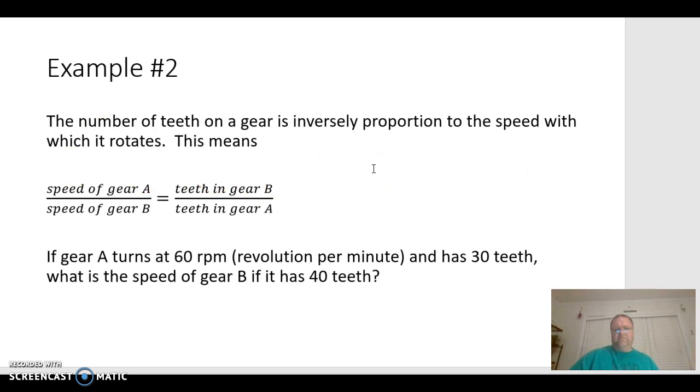Suppose that the number of teeth on a gear is inversely proportional to the speed with which it rotates. And this is often the case. So, in order to set up an inverse proportion, we're going to flip the second ratio. So, instead of the speed of gear A over the speed of gear B equaling the teeth in gear A over the teeth in gear B, we're going to flip that second fraction. So, the gear A's are going to be diagonal from each other and the gear B's are going to be diagonal from each other. And this only happens when we're doing an inverse proportion.